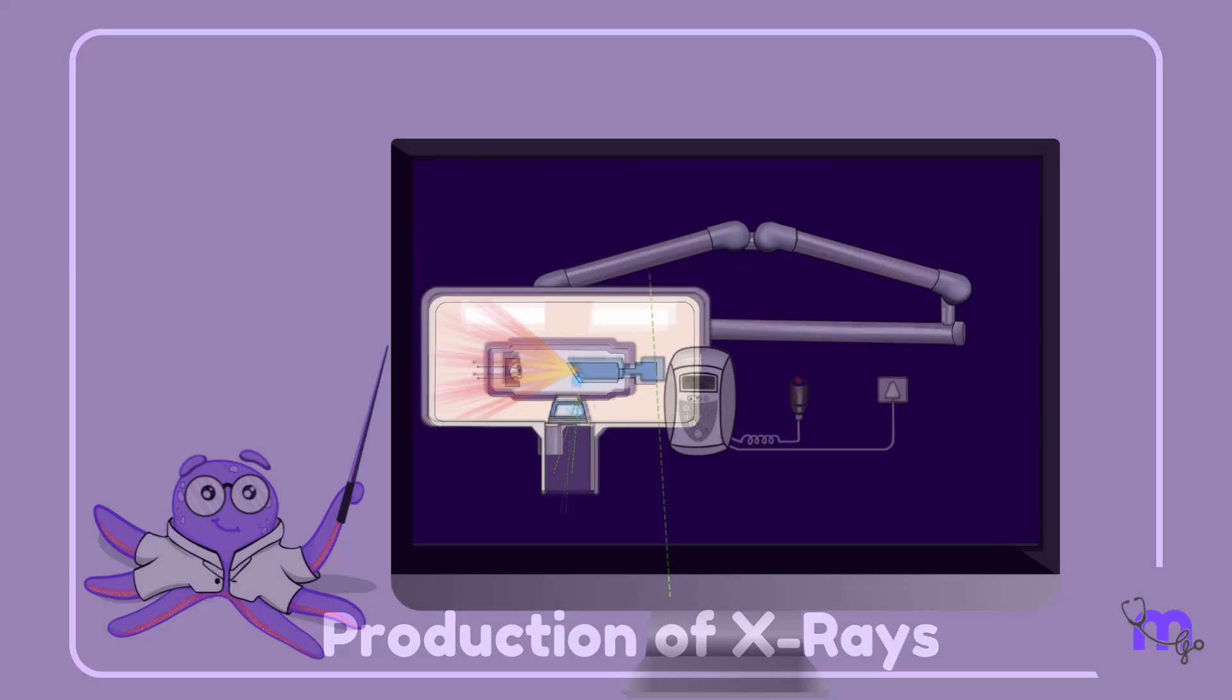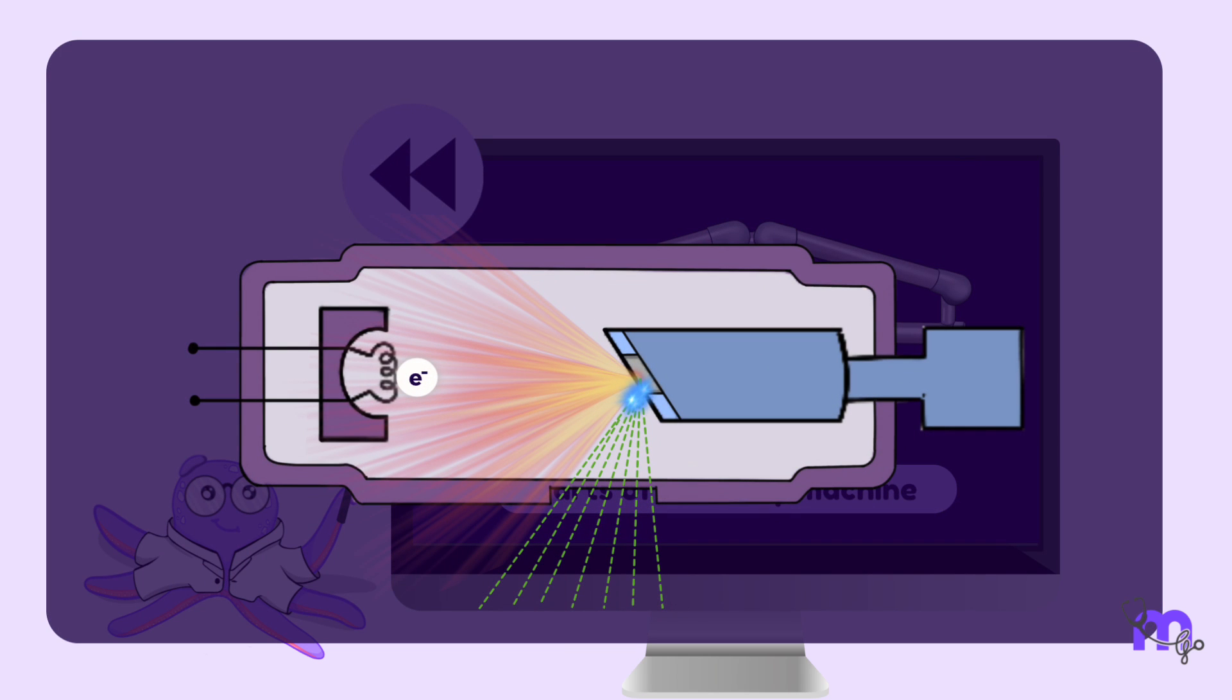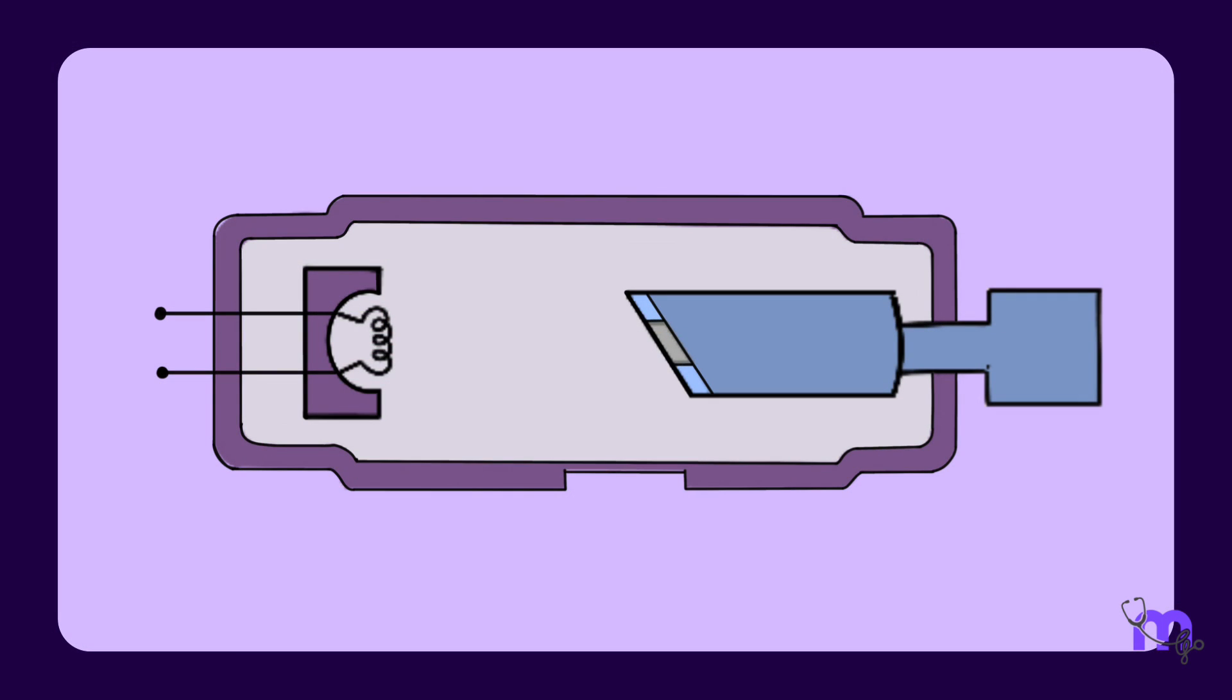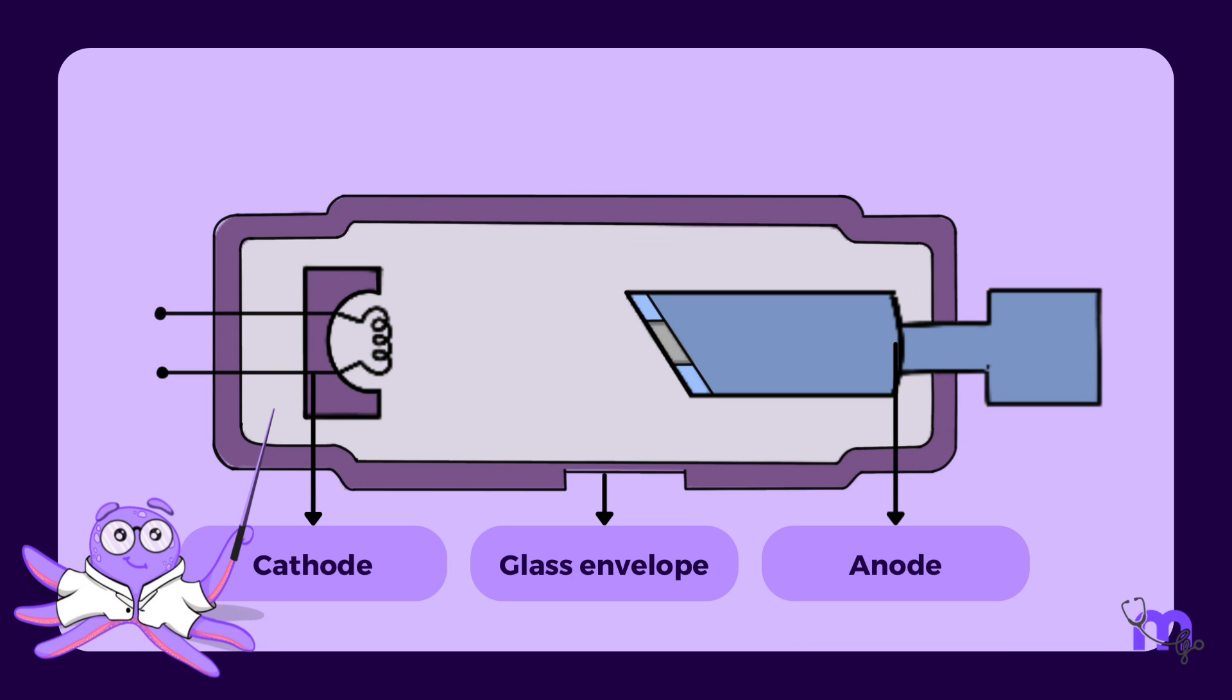X-ray tube. Having covered most of the components of the X-ray machine in our previous video, let us now learn about the most important part: the X-ray tube. X-ray tube is like the heart of the X-ray machine, primarily consisting of a glass envelope, a negative cathode, and a positive anode. Let's take a closer look into each of these parts.